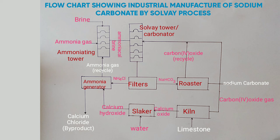So that is the industrial Solvay process. In this process, two substances are recycled: ammonia gas and carbon dioxide. The by-product is calcium chloride, which is used as a drying agent in the laboratory. Thank you, learners. The next lesson, we're going to look at atomic structure and the periodic table.